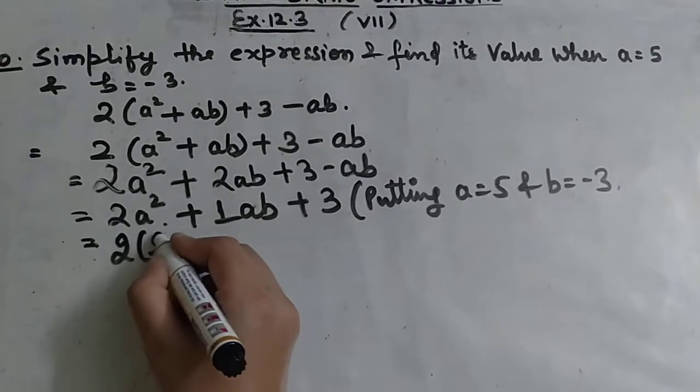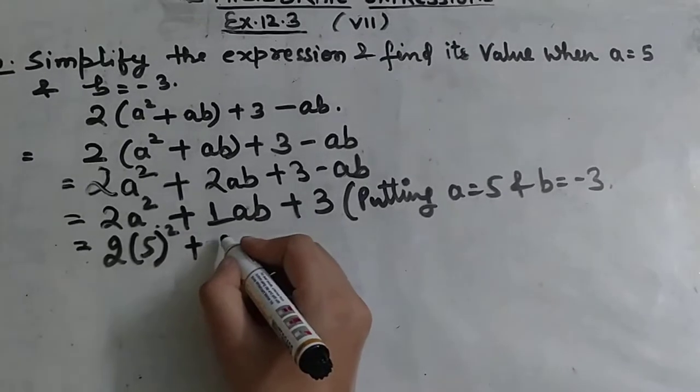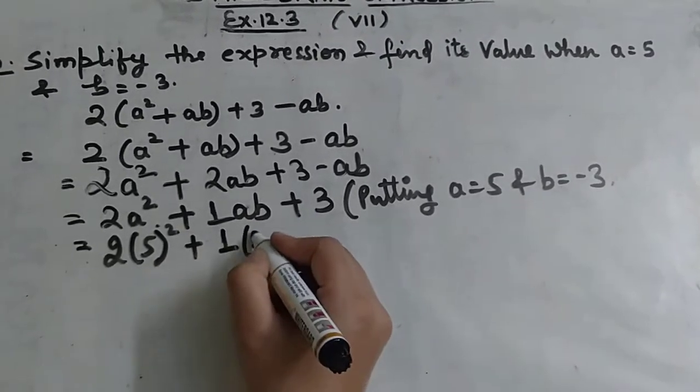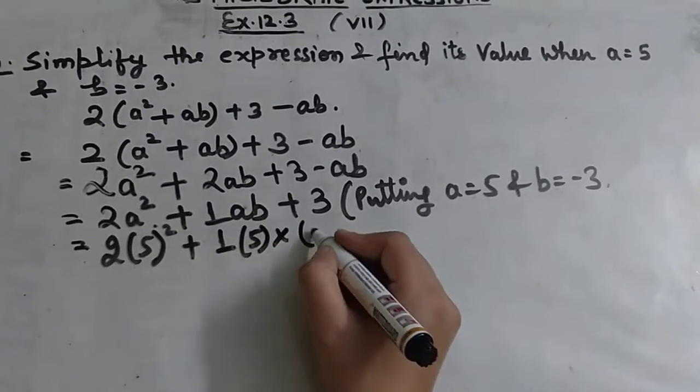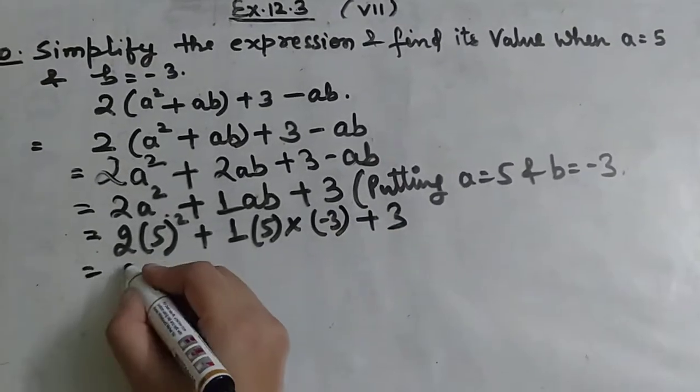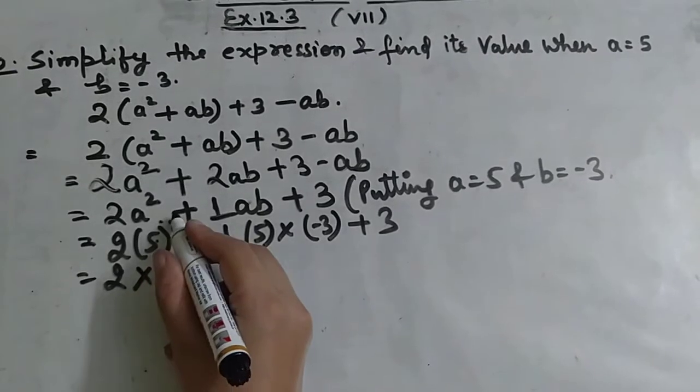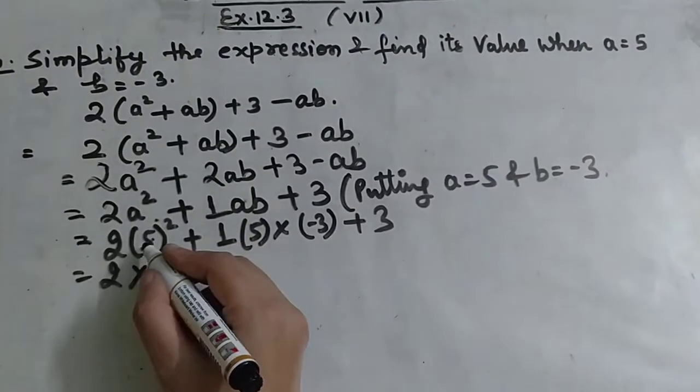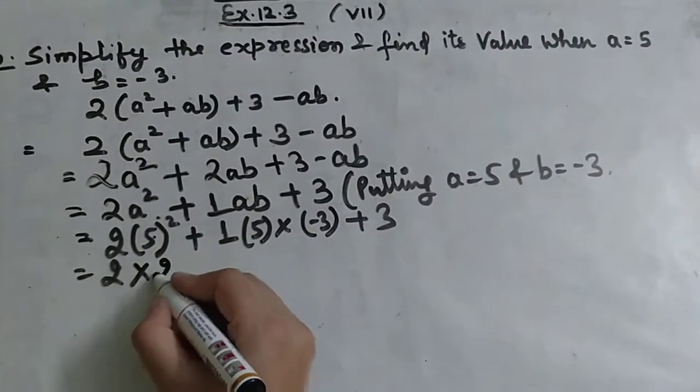A will be 5 squared, plus a value is 5 multiplied by b value which is minus 3, and plus 3. This will be 2 multiply 5 to power 2. 5 squared is 25.